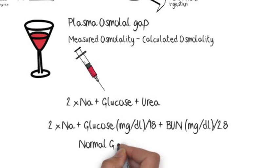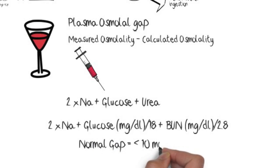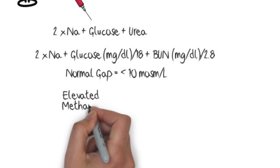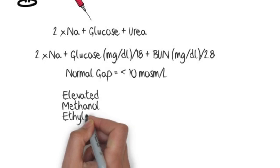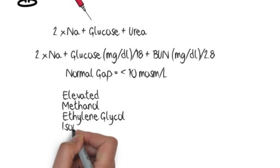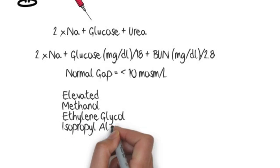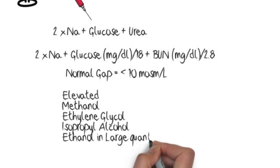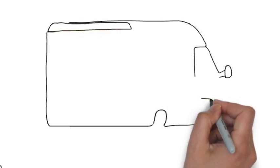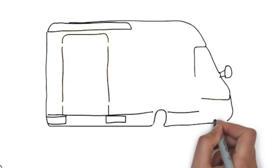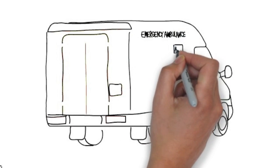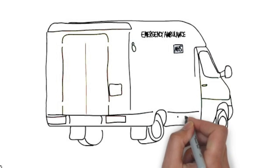The normal osmolal gap is usually less than 10 mOsm/L. If elevated, causes include methanol ingestion, ethylene glycol ingestion, isopropyl alcohol ingestion, and large quantities of regular ethanol. All toxic alcohol levels should be sent, but since this is an emergency, treatment must begin based on the history and elevated osmolal gap without waiting for results.